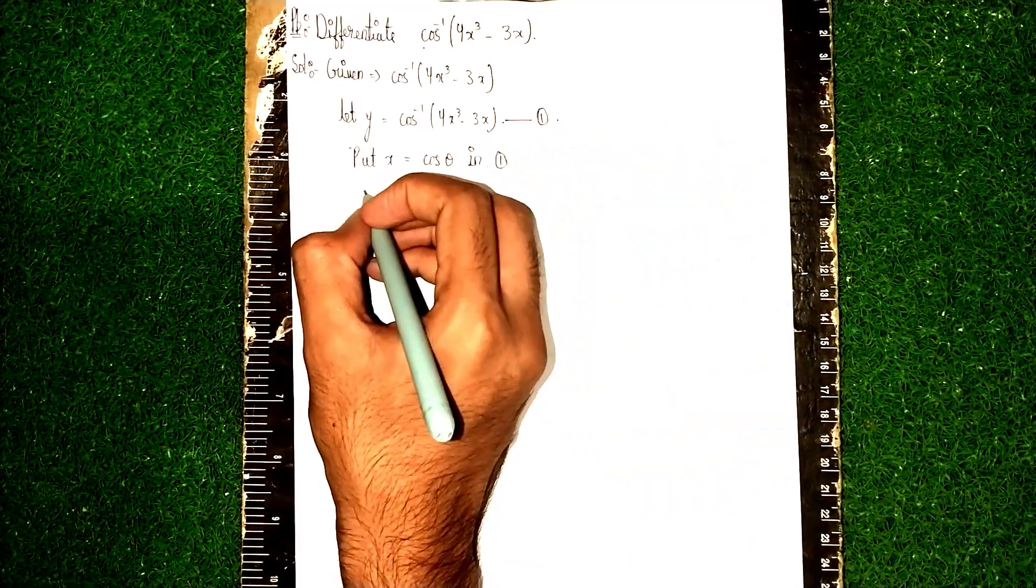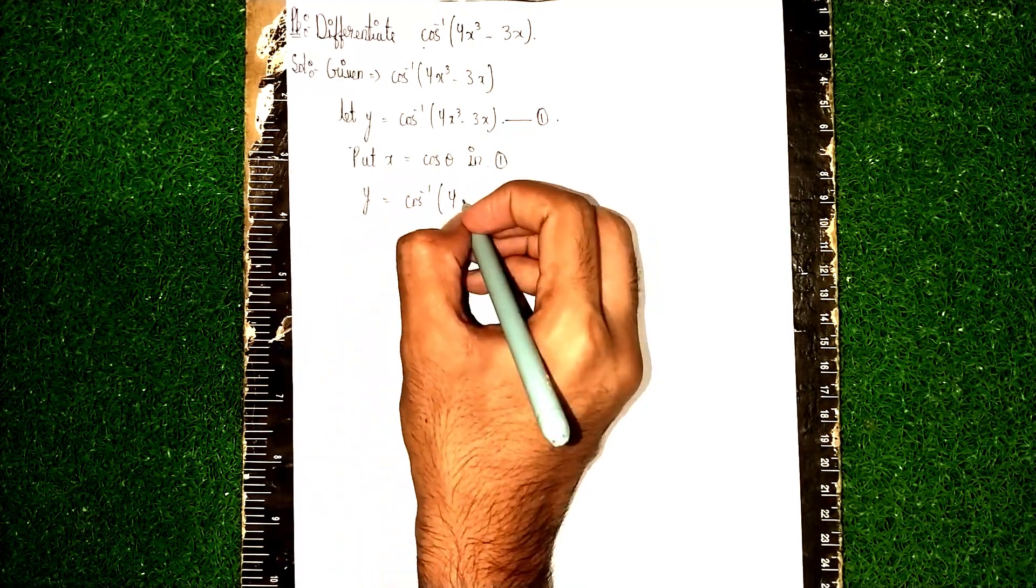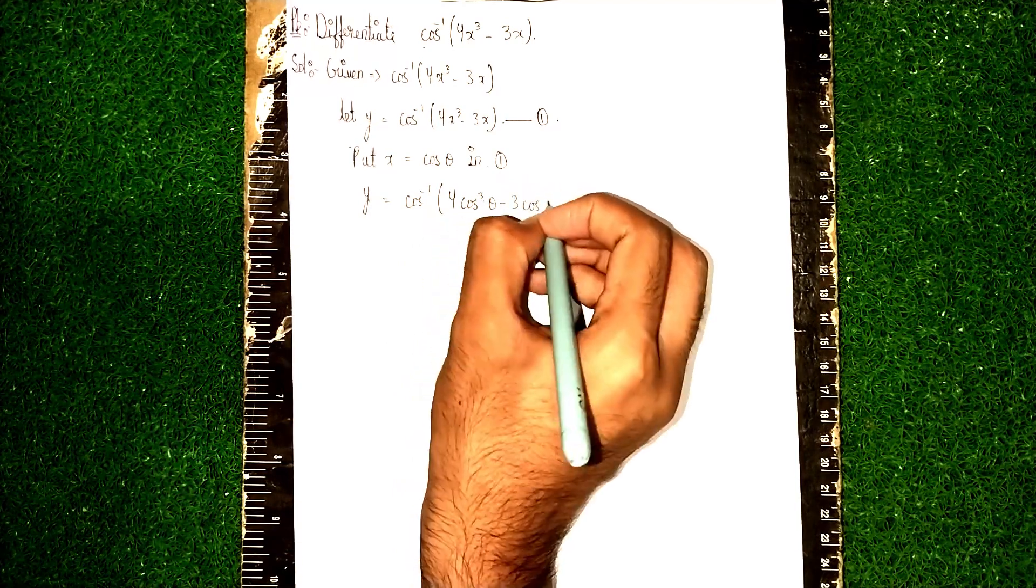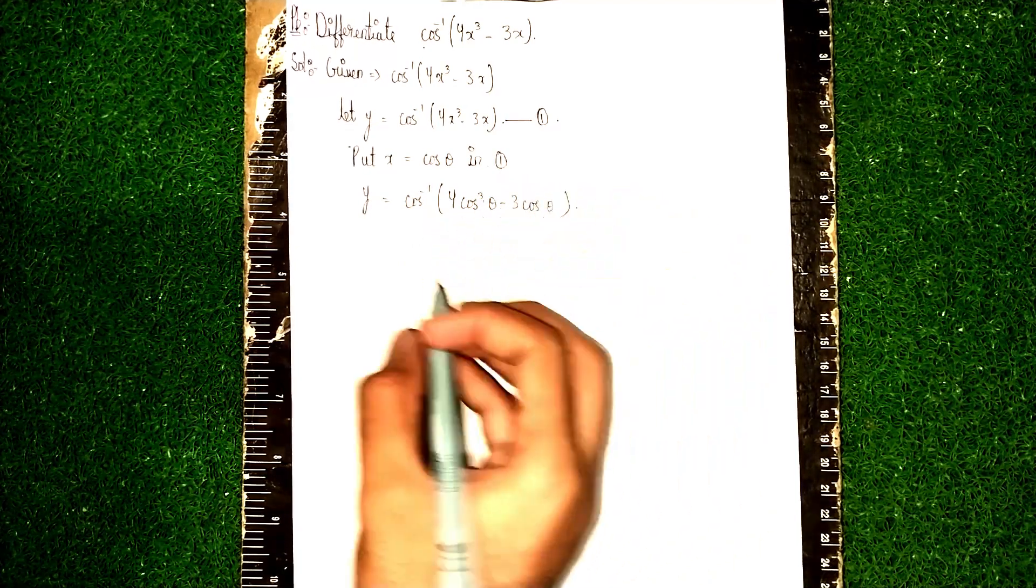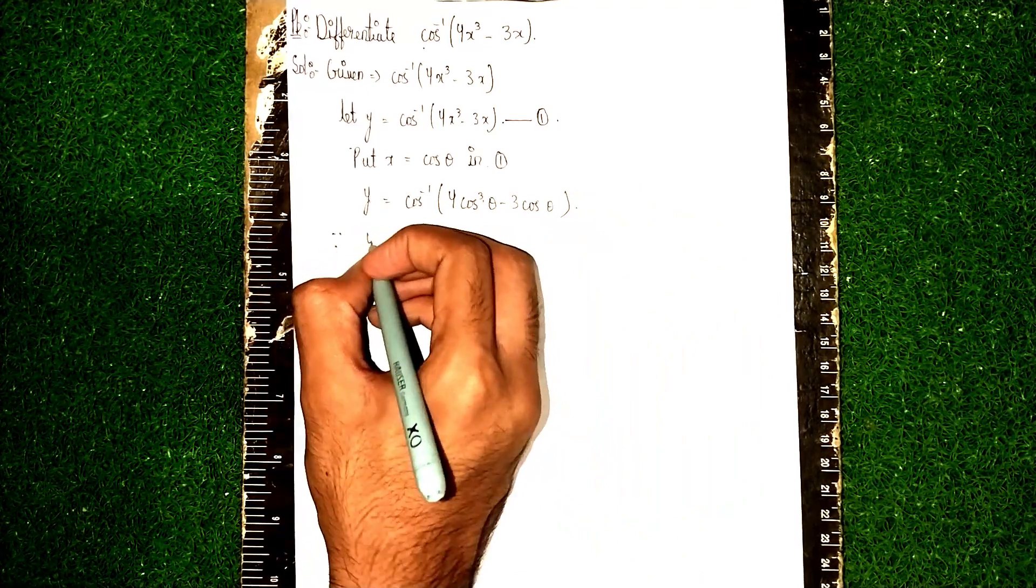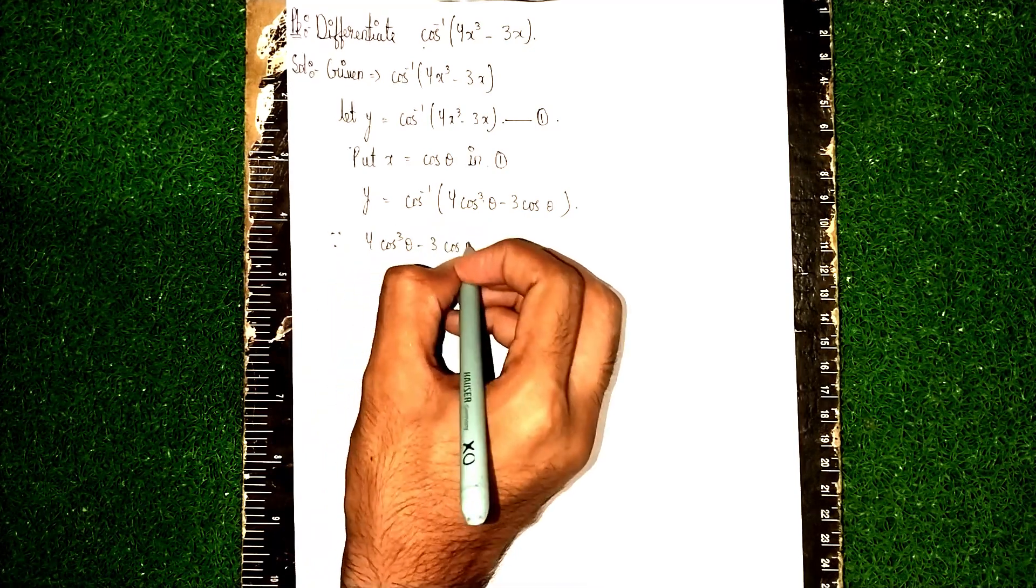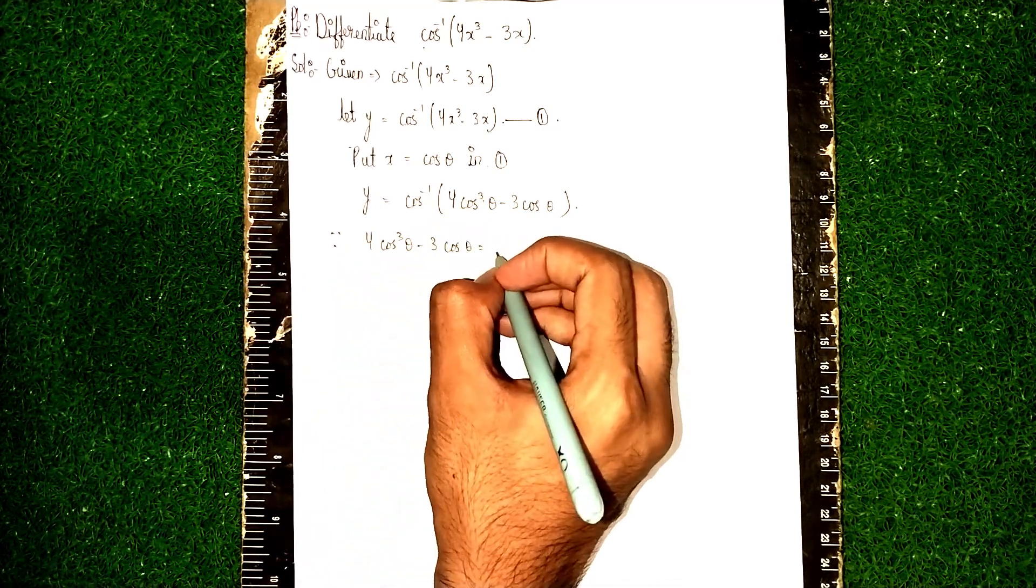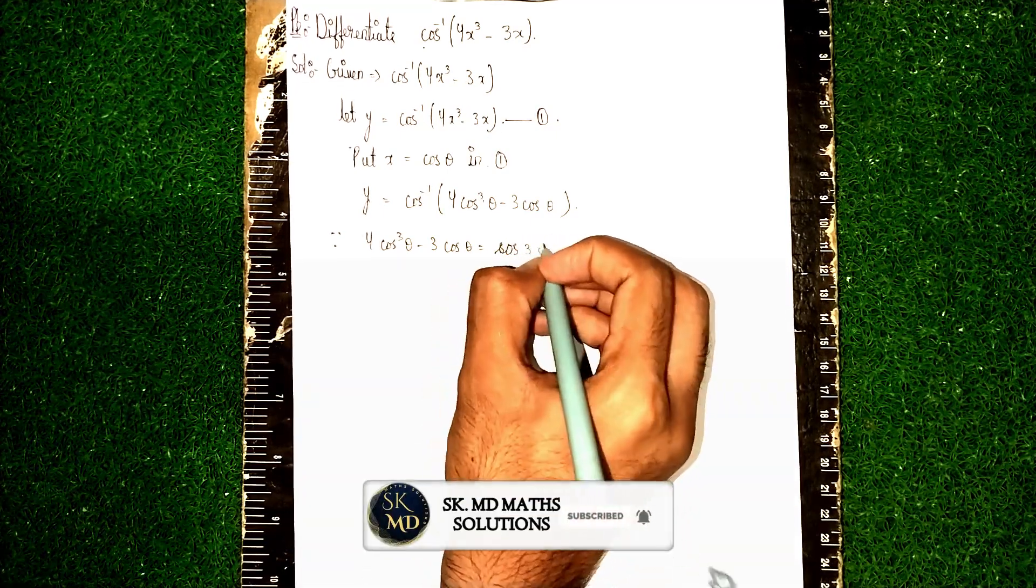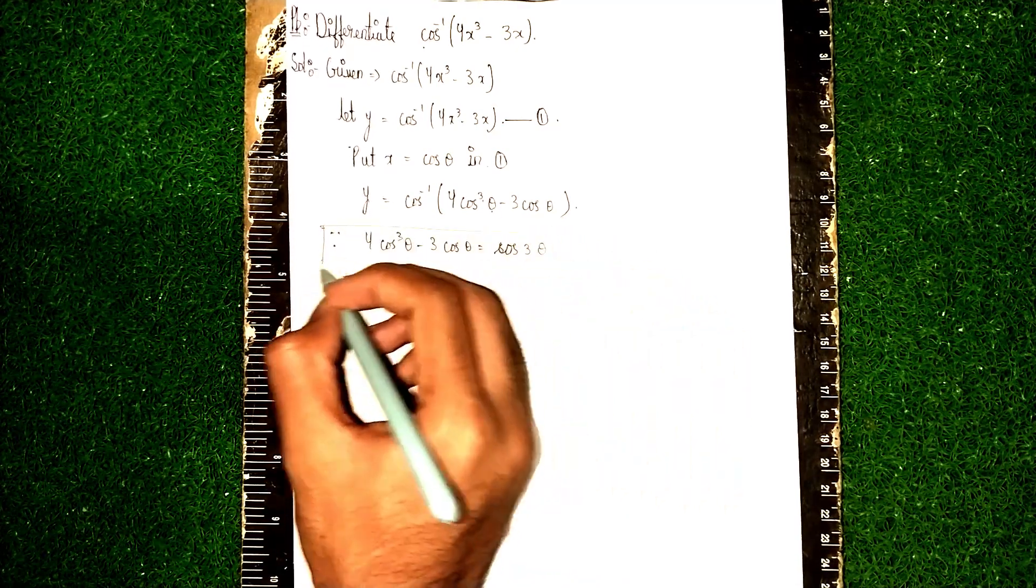So it becomes y equal to cos inverse of 4 cos³θ - 3 cos θ. Now we know that 4 cos³θ - 3 cos θ is equal to cos 3θ. This is a formula. Instead of this, we can write cos 3θ.